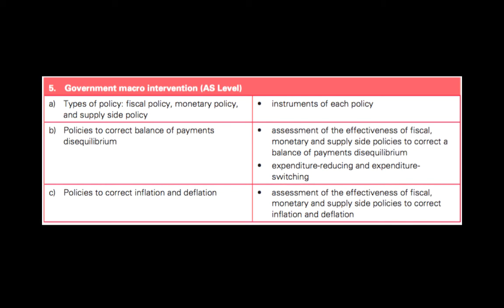Unit 5 in the AS economics syllabus finishes with fiscal policy, monetary policy, and supply side policy, focusing on how those instruments are used to address problems such as the balance of payments disequilibrium and the issues around inflation and deflation. In A2 you go into more detail with real GDP output, unemployment, the price level, and international trade, but here it's briefly introduced, so let me walk you through what you need to know.